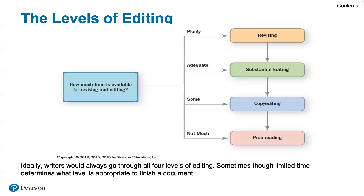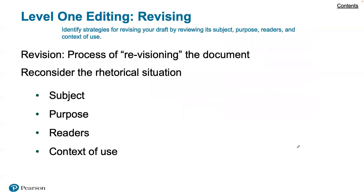Here is a graphical way of thinking about the levels of editing. Ideally, writers should always go through all four levels, though sometimes limited time determines what level is appropriate. There should be plenty of time for revising, adequate time for substantive editing, some time for copy editing, and proofreading should not take too much time. Various software packages like Grammarly can help at that level.